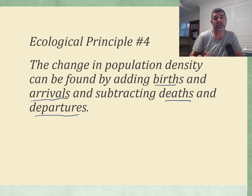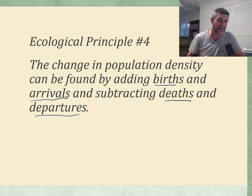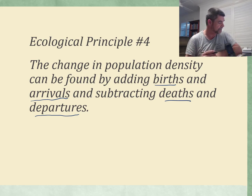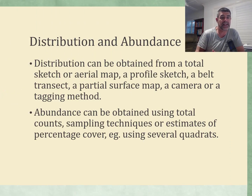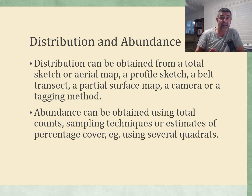It's important to remember that ecological boundaries are human constructs — they're not things that living organisms see as little dotted lines in the sand. They will cross them, of course. So we need to keep these things in mind when measuring population density. Distribution is where the organisms are, and abundance is how many there are.